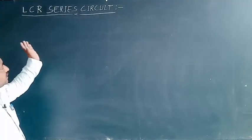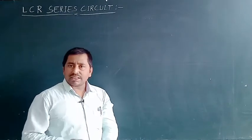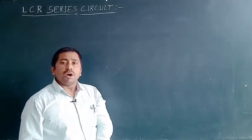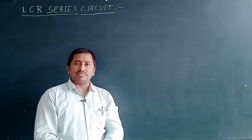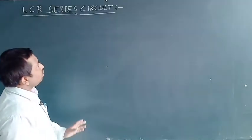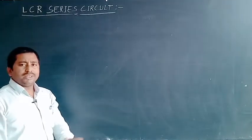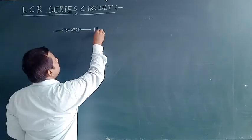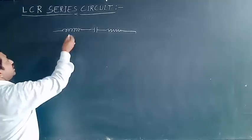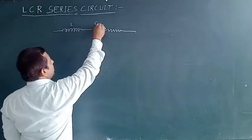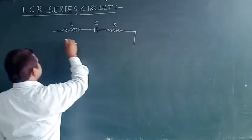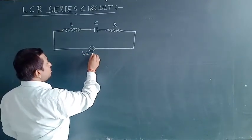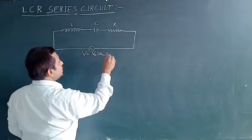Now let us discuss the LCR series circuit. We will determine what the phase of the current flowing through the LCR series circuit is relative to the supplied voltage, and also what the total resistance of the circuit — known as impedance — is. Suppose we have an inductor with inductance L, a capacitor with capacitance C, and a resistor with resistance R connected in series through an AC voltage source whose potential at any instant is given by V = Vm sin(ωt).